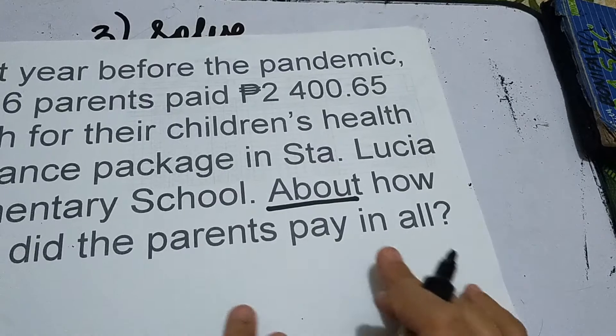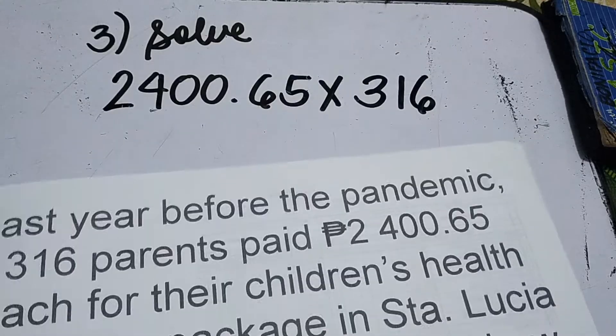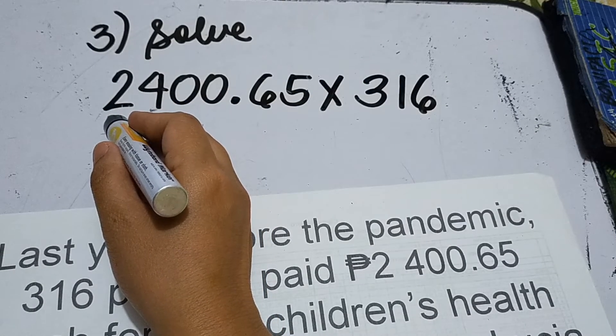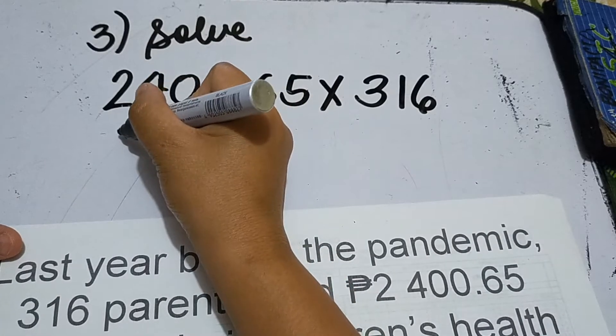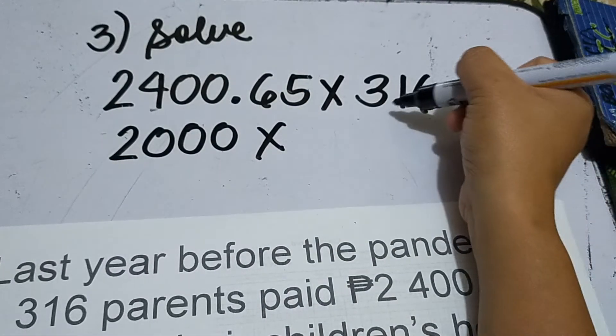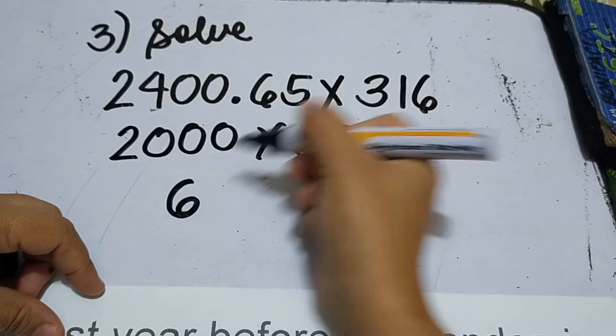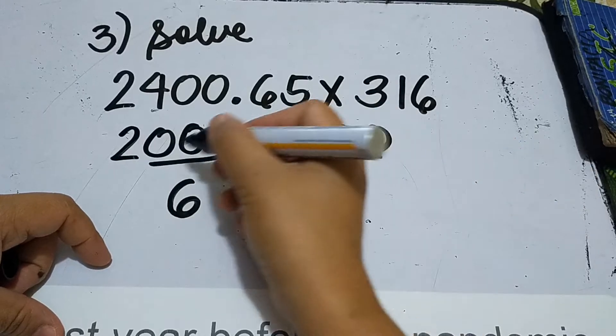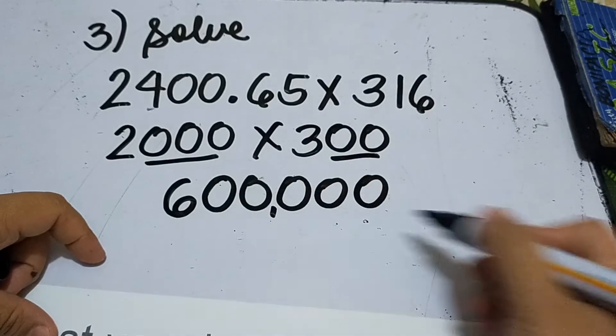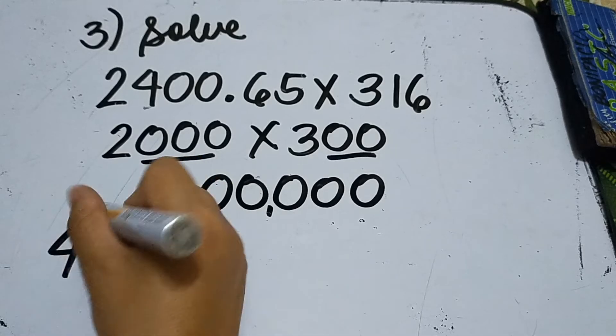Since in our problem there's the word 'about,' we need to do estimation. That means we have to round off this given to the nearest highest place value. Let's round it off to the nearest thousand, so the answer here is 2,000. Then times 316, to the nearest hundreds, is 300. This is easy to answer: 3 times 2 is 6, and then just rewrite these zeros. How many? Five: one, two, three, four, five.